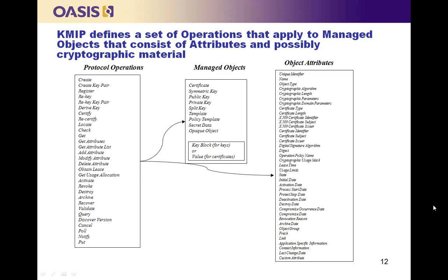KMIP also provides support for templates that can be used to establish default attribute values when creating an object. Various attributes are available for these objects, such as a unique identifier, the state of the object in terms of the key life cycle, and time-related attributes such as creation date. KMIP also defines two operations — notify and push — that can be initiated by the server rather than the client, enabling servers to notify a client when a cryptographic object has been compromised.